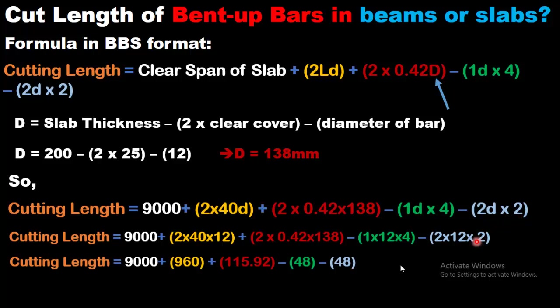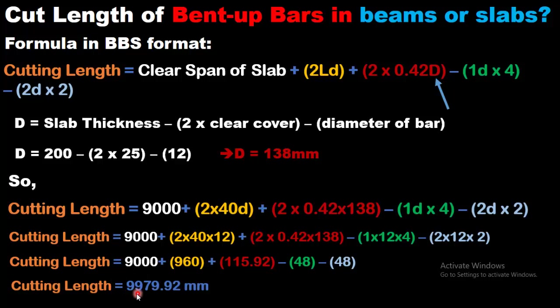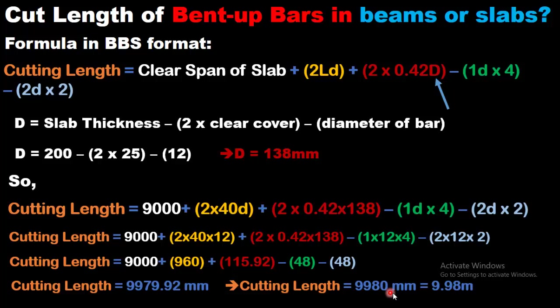Simplifying: 2 × 40 × 12 gives 960, and 2 × 0.42 × 138 gives 115.92, and deductions equal 48. So the cut length equals 9979.92 millimeters, which rounds off to 9980 millimeters, equal to 9.98 meters. That's how you can calculate the cut length of a bent up bar or crank bar having a clear span of 9000 millimeters.